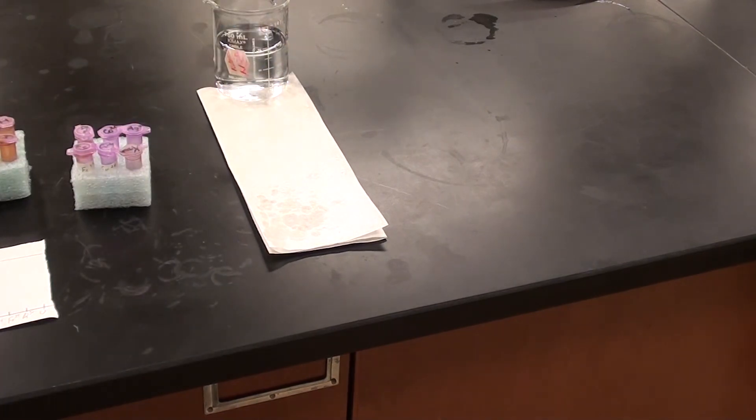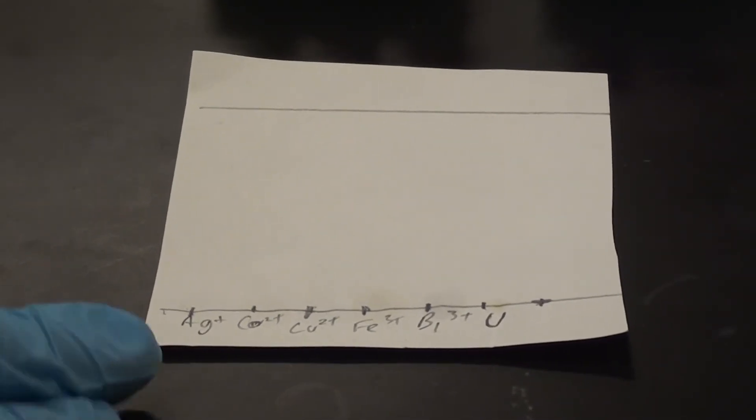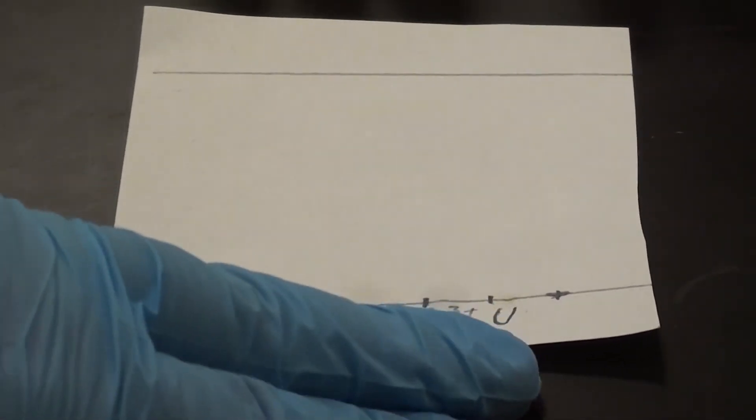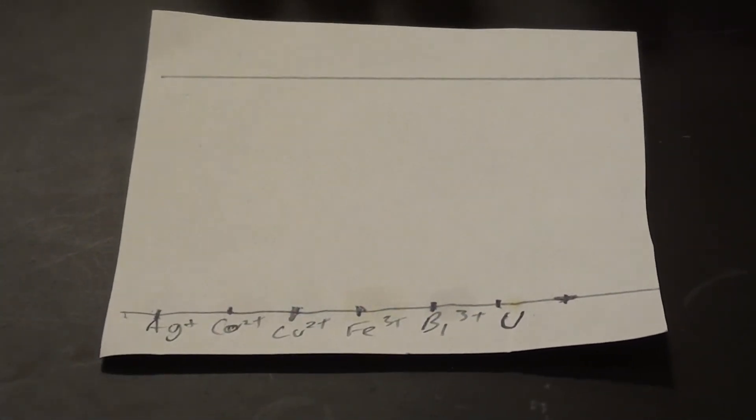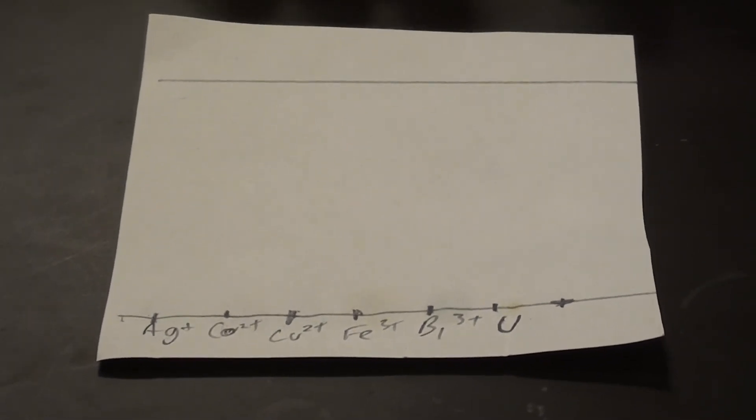So I'm going to spot all the samples on here and then we will develop it. Alright, so what I've done is I've spotted these, I've got the Ag+, the Co2+, the Cu2+, the Fe3+, the Bi3+, and I've also spotted an unknown as well. The unknown could be a combination of two to four of any of those ions that we have listed there.